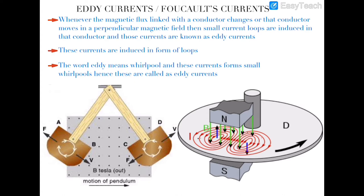These eddy currents are induced in the form of loops, and by comparing them with the whirlpool formed in water, we have named them whirlpool currents. The word 'eddy' means whirlpool. You can see that this disc is a conducting disc which is rotating through a magnetic field that is perpendicular to its face.